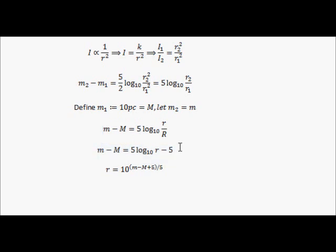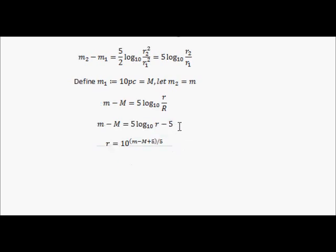Log 10 of big R is just 1, because log 10 of 10 is 1. Big R is 10 parsecs. And of course we're multiplying that by 5, so that's where the minus 5 comes from.